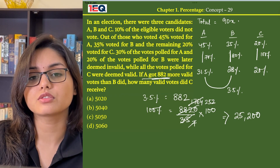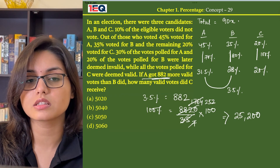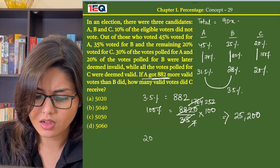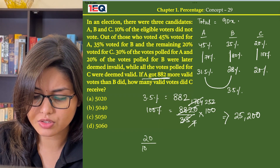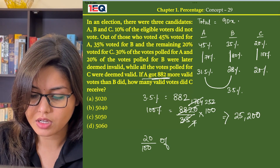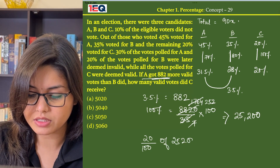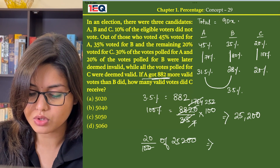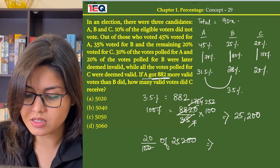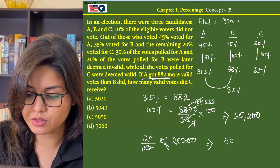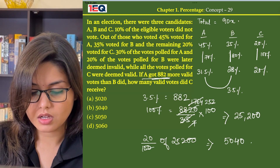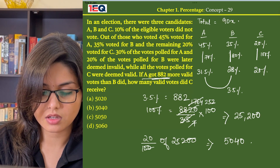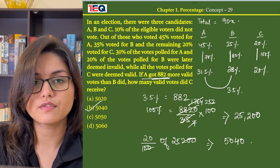Next, we are asked to find how many valid votes C received. C's share of valid votes is 20% of 25200. Cancelling the zero, 252 × 20 = 5040. So the answer to this question is option B, that is 5040 votes.